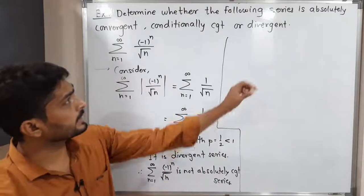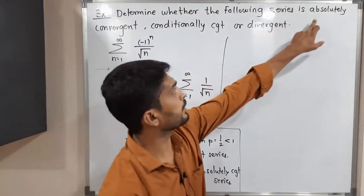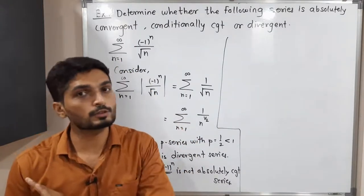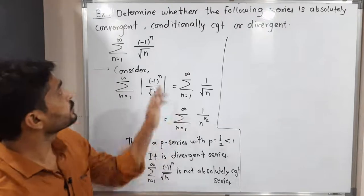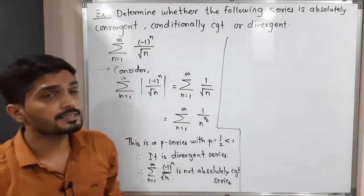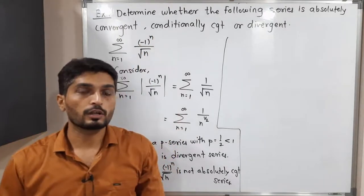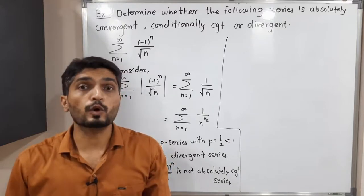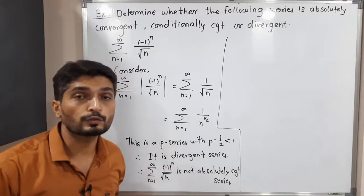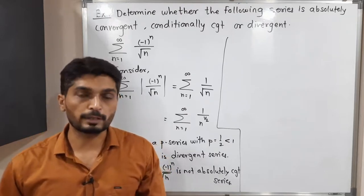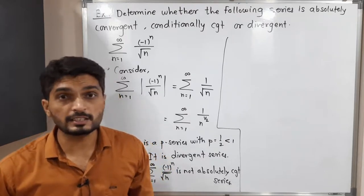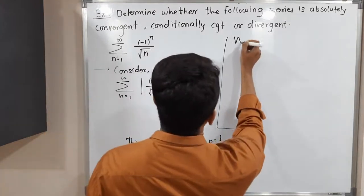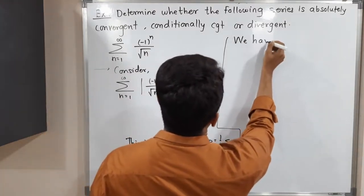We have completed the first part. The next step is to check whether the series is conditionally convergent or not. A series is conditionally convergent if it is convergent but not absolutely convergent. So we simply need to check whether the given series is convergent.